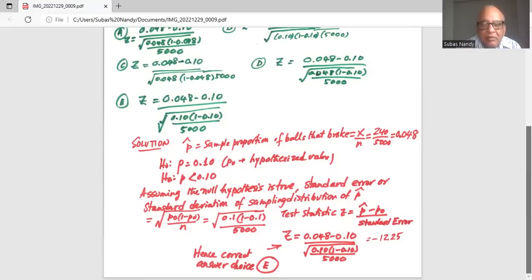So my Z test statistic will be 0.048, which is P hat, minus my hypothesized population proportion 0.1, divided by square root of 0.1 times 1 minus 0.1 divided by sample size of 5000, which gives Z of minus 12.25. So my correct answer choice is E, which is Z = 0.048 minus 0.1 divided by square root 0.1 times 1 minus 0.1 divided by 5000.